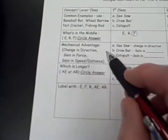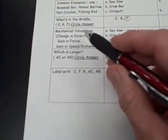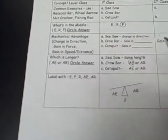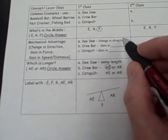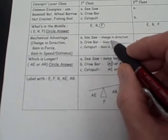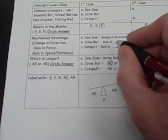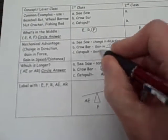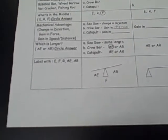Then we want to look at what mechanical advantage these levers give us. And again, it can be either a change in direction, gain in force, or gain in speed or distance. So, a seesaw has, of course, a change in direction. Crowbar, that's probably a gain in force, and a catapult. Again, look at your notes and see what that says.